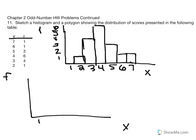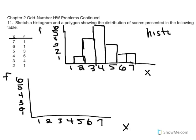We'll construct our abscissa and ordinate scales again. Working left to right using the data, we're going to construct a polygon. This is a frequency histogram and this is a frequency polygon — a line graph.